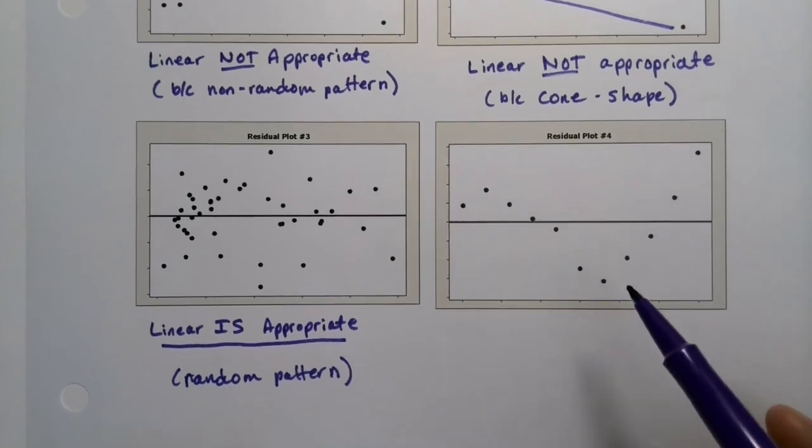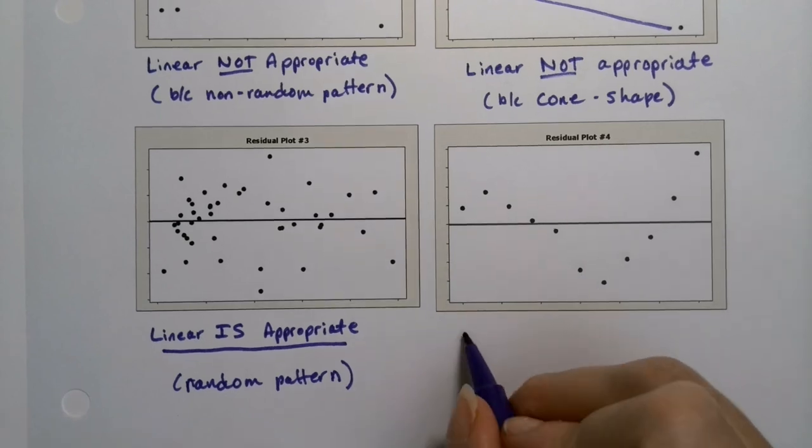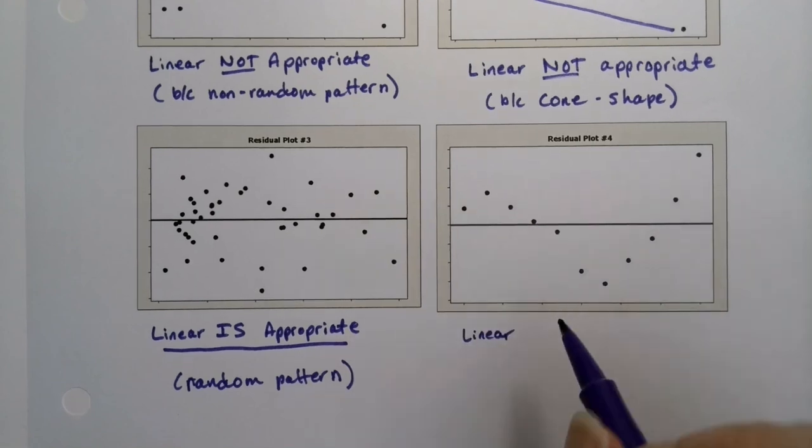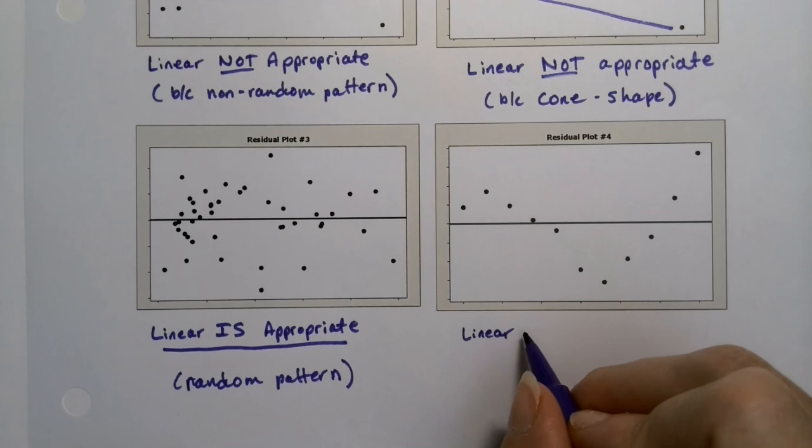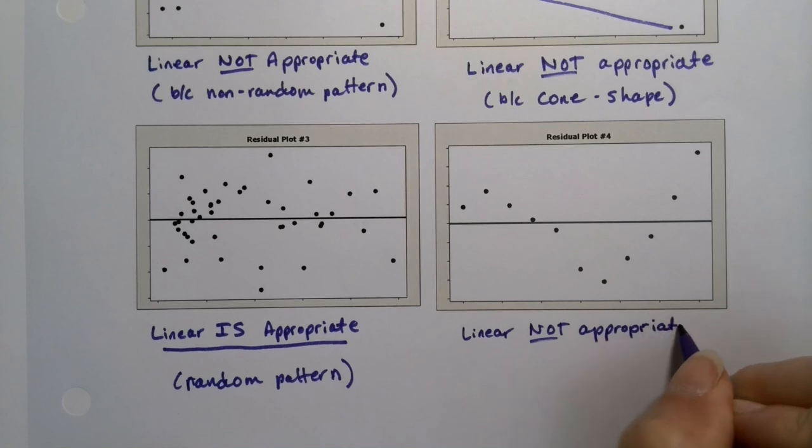And then this one is actually a different kind of problem. This is actually a real data set. This is airline sales, number of passengers on airlines for different years, as a matter of fact. So, linear model is not appropriate. It has a kind of an S-shaped curve. It has a non-random pattern. It has a curve. Curves are never a good sign.